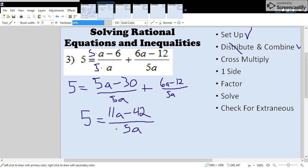Step three, we're going to cross multiply. Since the 5 is by itself, we could put a 1 in the denominator. Go ahead and cross multiply those. You should get 25a equals 11a minus 42. So we're done with step three.